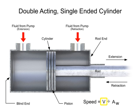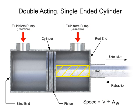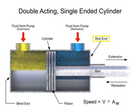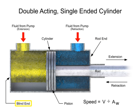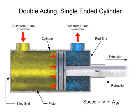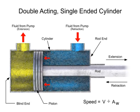Assuming that the volumetric flow rate is equal for each inlet, because the rod takes up space within the cylinder, less fluid is required to fill that side. This means that the fluid can fill the rod end side more quickly than it can fill the blind end, so the cylinder will always retract faster than it can extend.